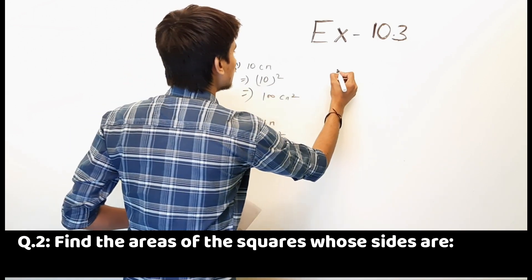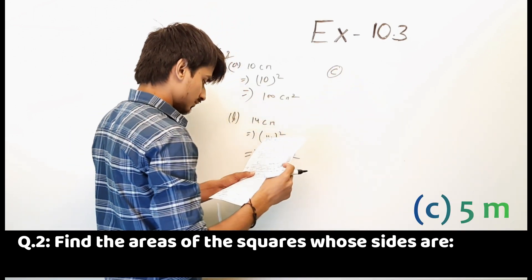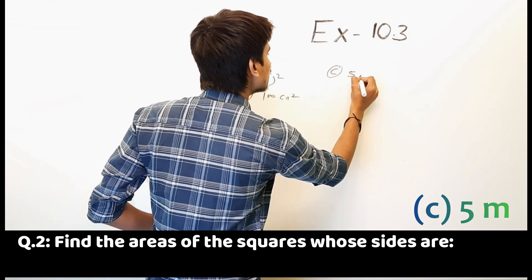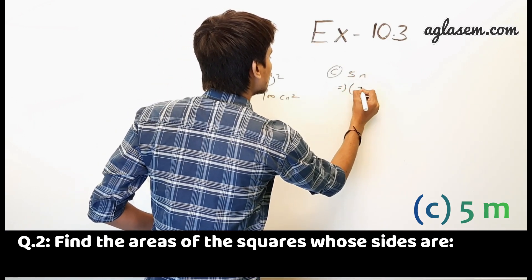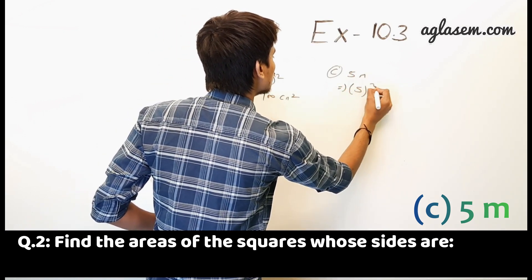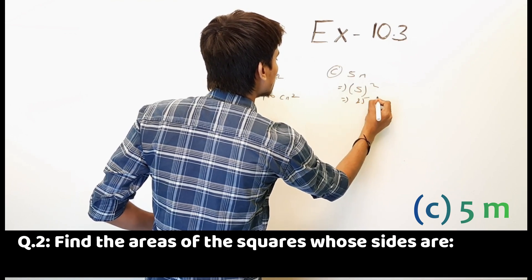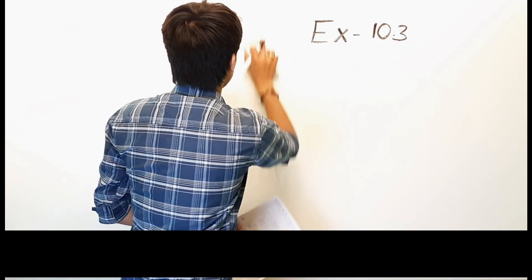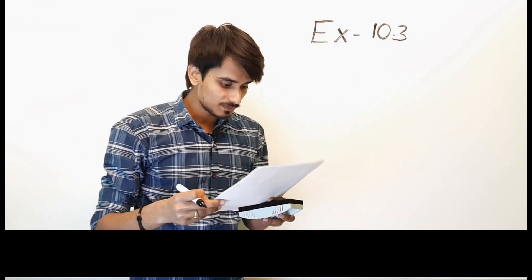Part C: side is 5 meter. So 5 squared is equal to 25 meter square. Moving to the third question.